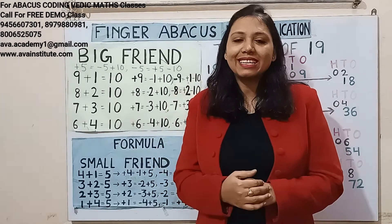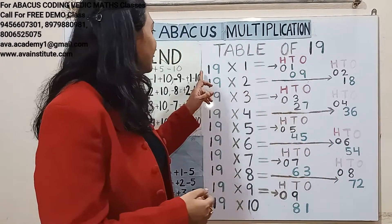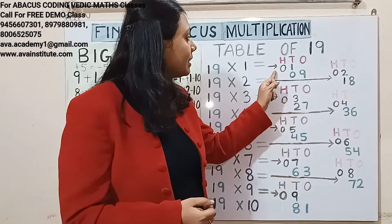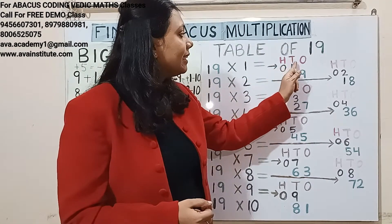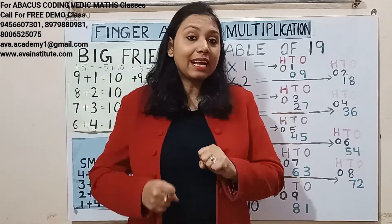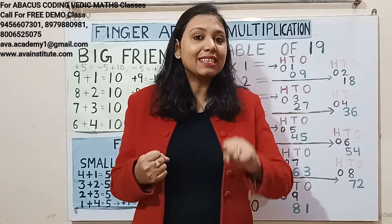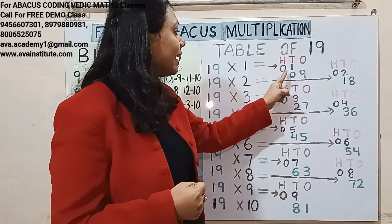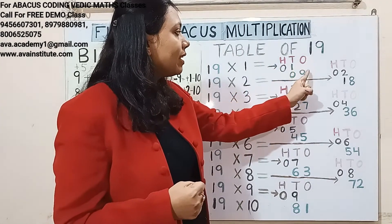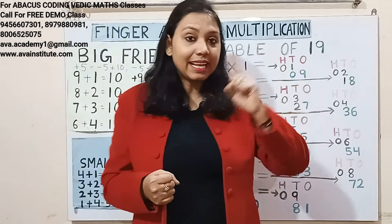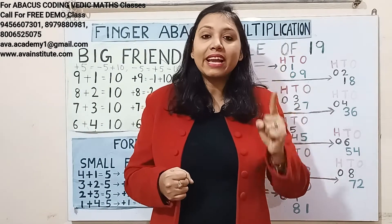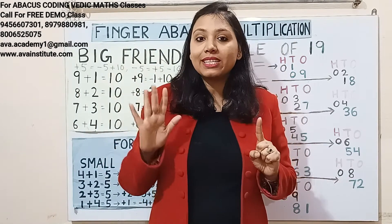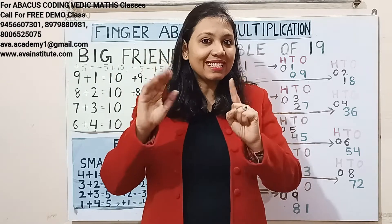19 ones are: 1 one is 1 — in hundreds we represent 0, in tens we represent 1. 9 ones are 9 — in tens place we represent 0 and in ones place we represent 9. So the answer is 19.